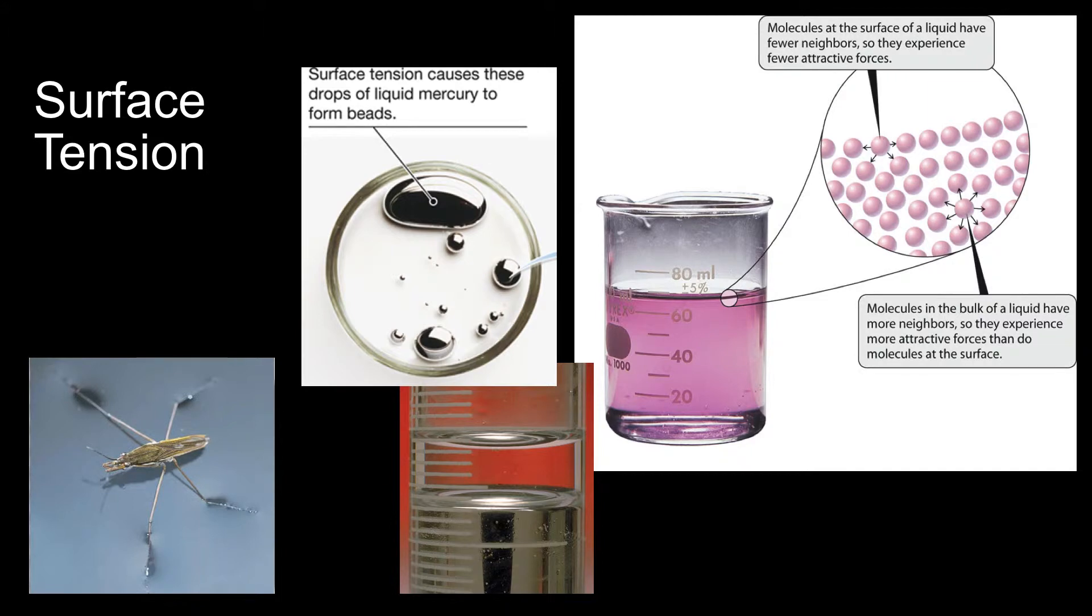Surface tension is a result of unbalanced intermolecular forces at the surface of a liquid. They point down into the liquid. As intermolecular forces increase, so does the surface tension.